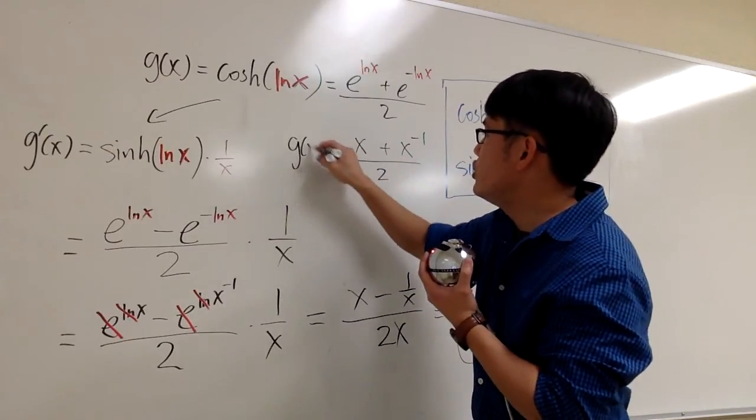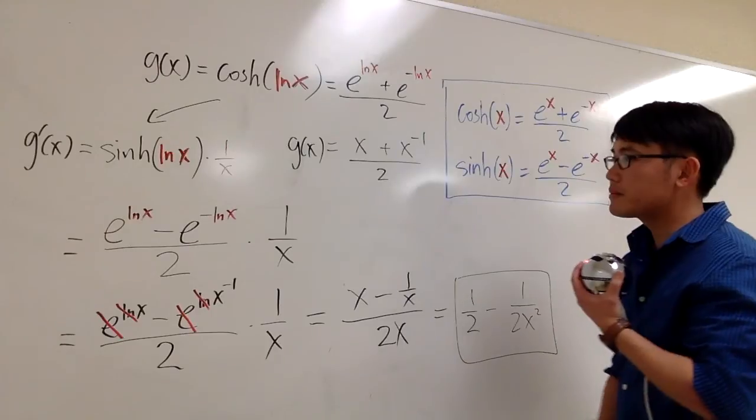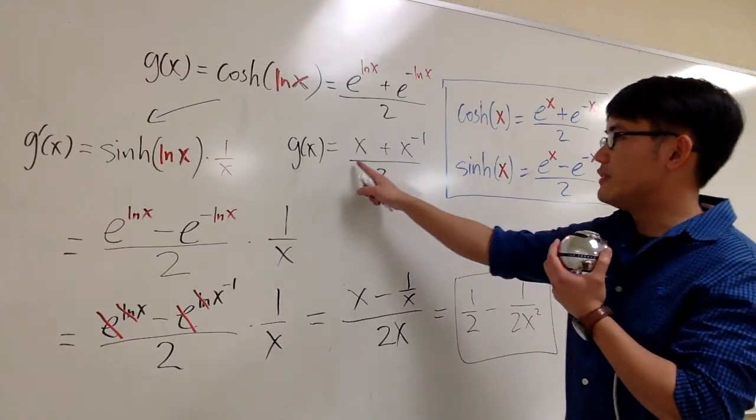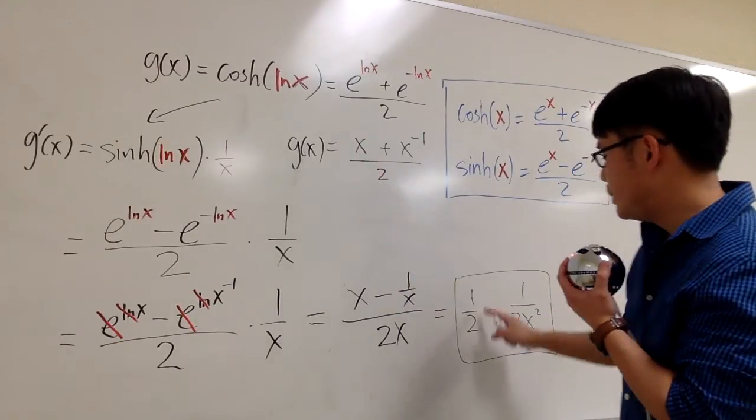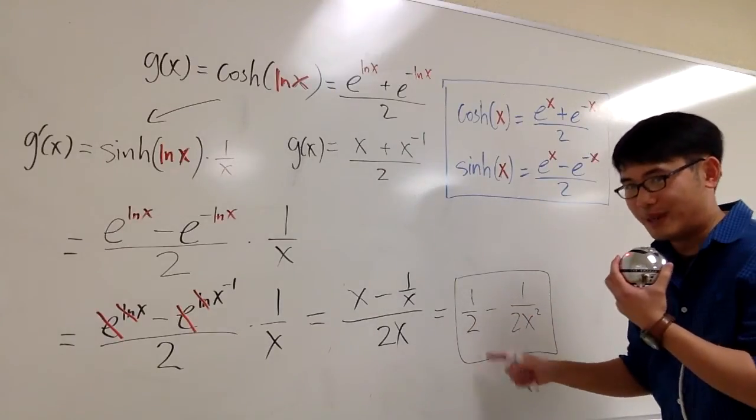So we technically have plus x to the negative 1 over 2. This is g of x in another look. And then, of course, if you differentiate this, the derivative of x over 2 is going to be 1 over half. 1 over 2, I mean.